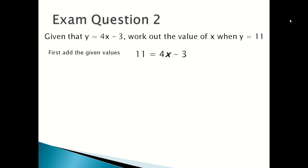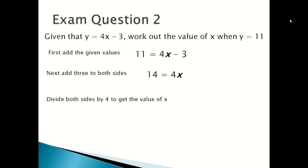Next, you add 3 to both sides to get the x term on its own, so it becomes 14 equals 4x. Then you divide both sides by 4 to get the value of x, giving 3.75 equals x. So the value of x is 3.75.